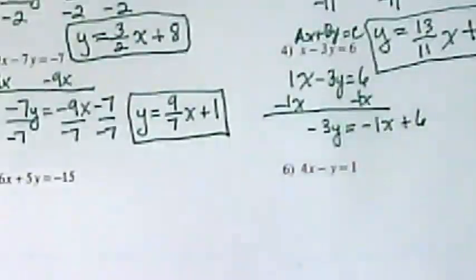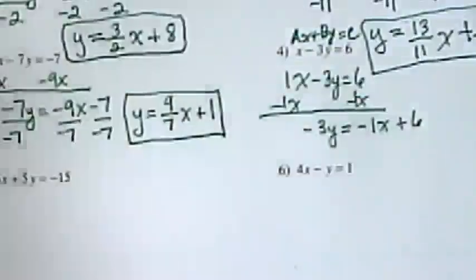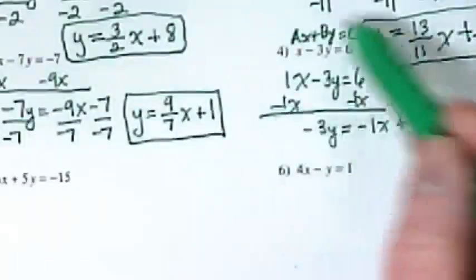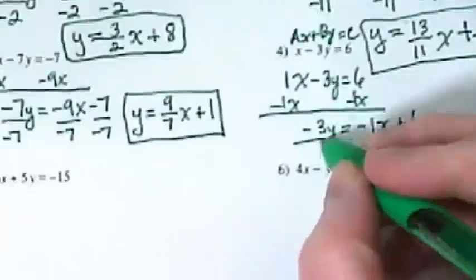What does step two ask us to do? Divide everything by B. What's in place of the B in this equation? Negative 3.